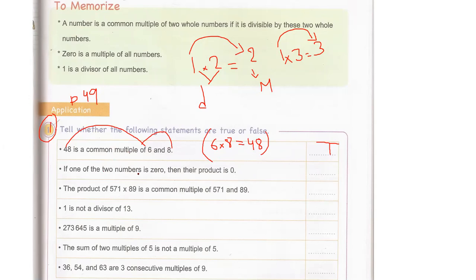If one of the two numbers is zero, then their product is zero. What do I mean by product? I mean the answer of a multiplication. If one of the two numbers is zero — for example, zero times three — the answer will be zero. Any number multiplied by zero gives zero. So the product is zero. Is it true? Yes.